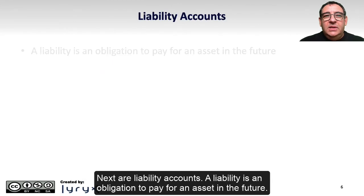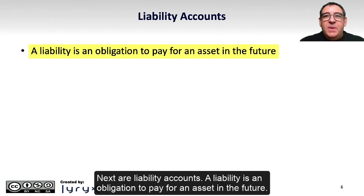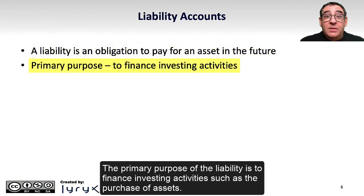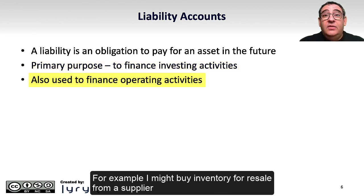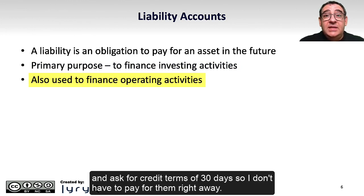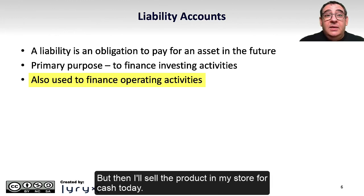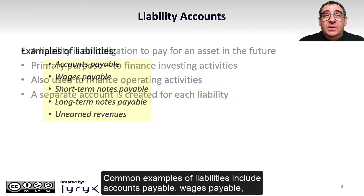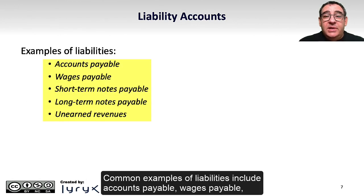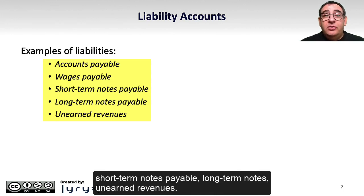Next are liability accounts. A liability is an obligation to pay for an asset in the future. The primary purpose of a liability is to finance investing activities such as the purchase of assets, or to finance operating activities. For example, I might buy inventory for resale from a supplier and ask for credit terms of 30 days so I don't have to pay for them right away, but then sell the product in my store for cash today. Just like assets, a separate account is created for each liability. Common examples of liabilities include accounts payable, wages payable, short-term notes payable, long-term notes, and unearned revenues.